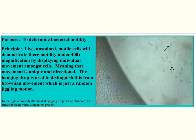Here we have an unstained motile cell demonstrated with the arrows. The purpose of our hanging drop is to see very large structures or to determine if an object has actual motility, or if the movement is just random Brownian motion.